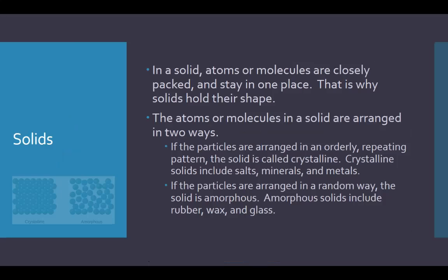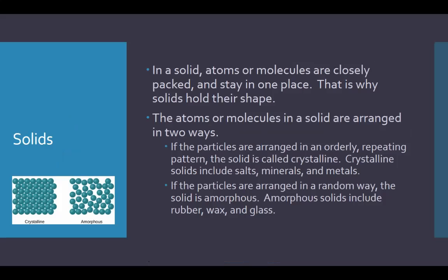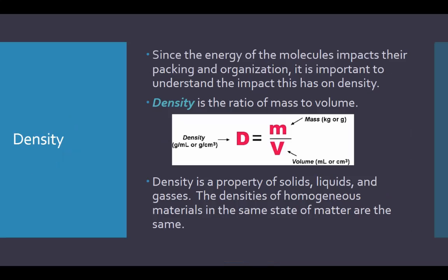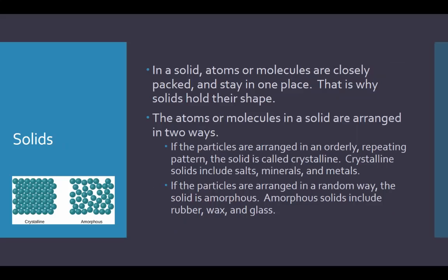In a solid, particles are closely packed. There are two types of solids: crystalline solids, which have a very uniform pattern in terms of how the particles are related to each other, and amorphous solids, which have less organization in terms of their actual particles. These are two terms you should recognize. It's useful to refer to things as a crystalline solid if it is very well organized, or as an amorphous solid where there is less organization in the alignment and structure of the molecules.